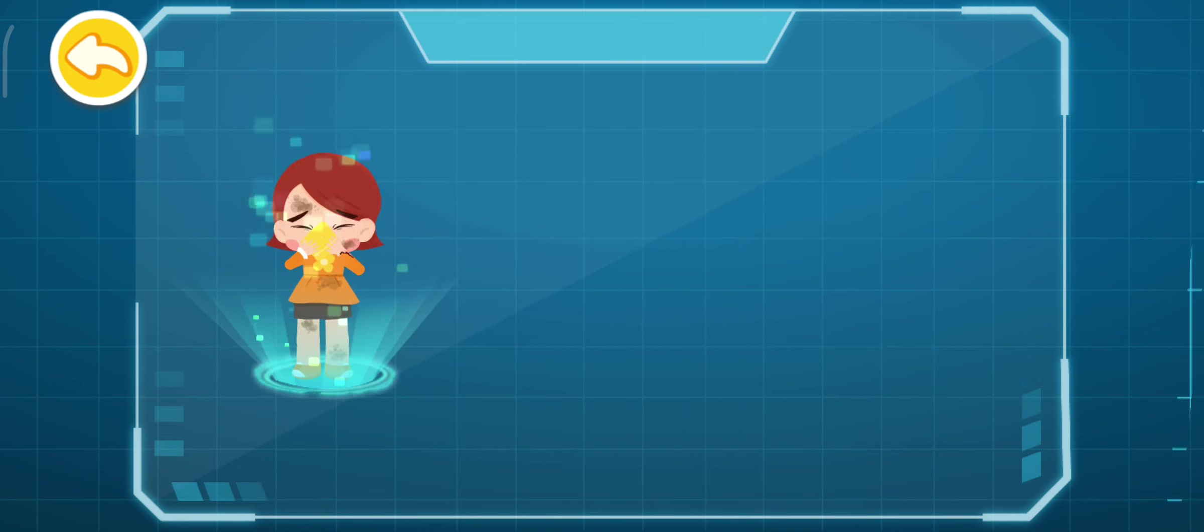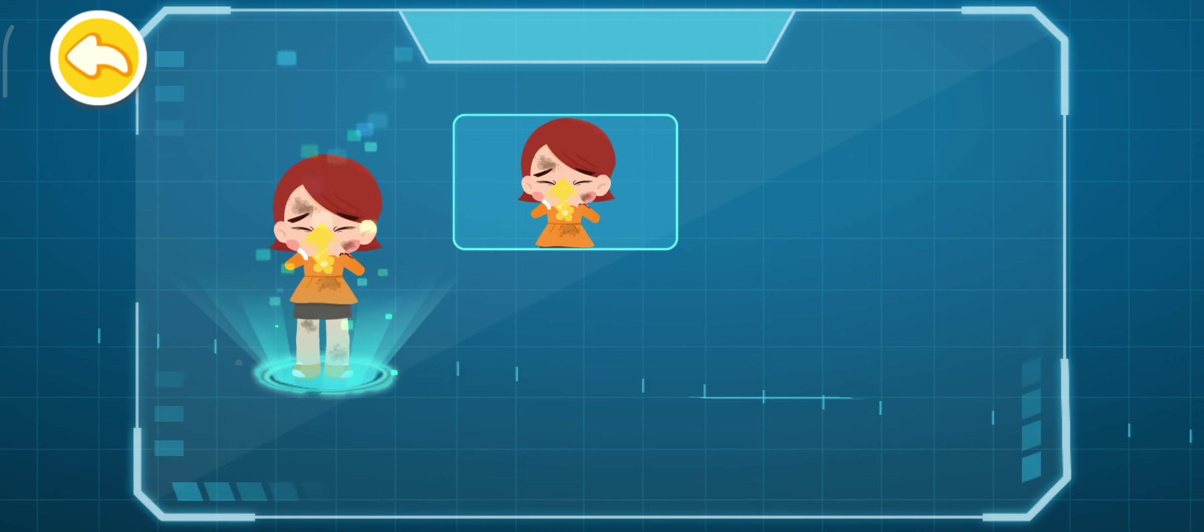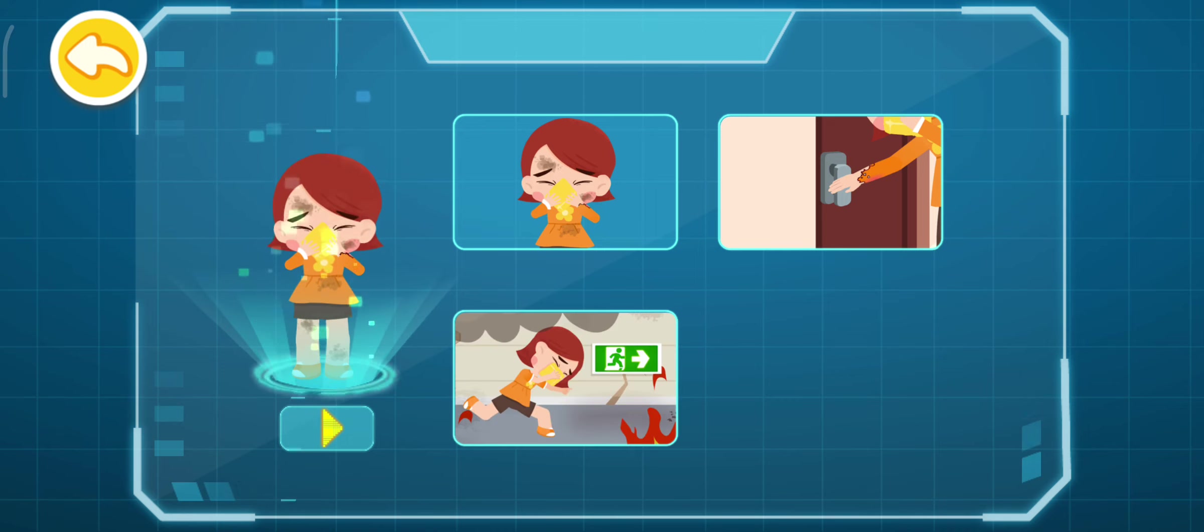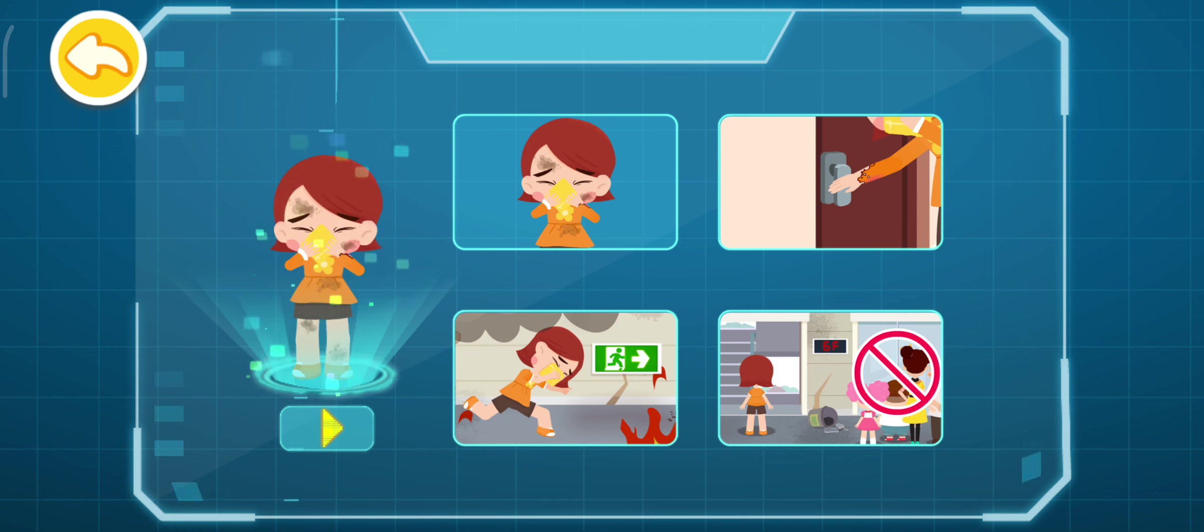Perform self-rescue from fire to evacuate safely. 1. Cover your nose and mouth with a wet towel. 2. If the doorknob is not hot, open the door to check if there's smoke. 3. Bend forward and proceed to locate emergency exit. 4. Take the stairs instead of the elevator.